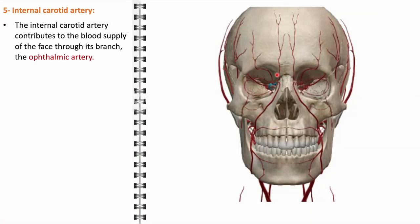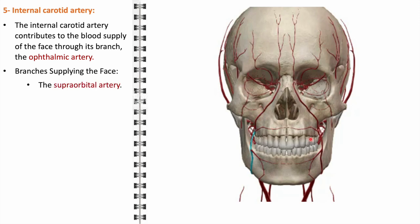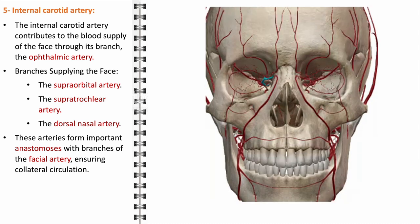The internal carotid artery, while primarily known for its role in supplying blood to the brain, also contributes significantly to the facial vasculature through its branch, the ophthalmic artery. This artery begins as the internal carotid artery enters the cranial cavity and has a vital role in providing blood to the eye and surrounding structures. The branches of the ophthalmic artery that specifically supply the face include the supraorbital artery, which travels along the supraorbital margin supplying blood to the forehead and scalp; the supratrochlear artery, emerging near the medial angle of the orbit, supplying the medial aspect of the forehead; and the dorsal nasal artery, which supplies the skin of the dorsal nose.